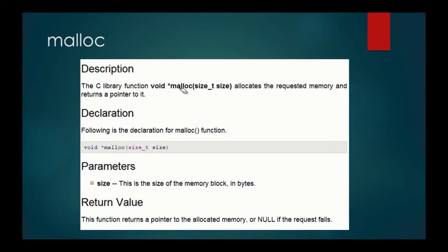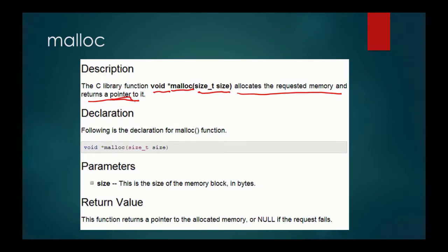There are a couple of things we need to know: the name of the function, which is malloc, the type and number of arguments, its return type, and then its description. What does it do? It allocates the requested memory and returns a pointer to it. We can see that it returns a pointer because of how we define a function that returns a pointer. In this case it may be a little strange because it's a void pointer. We don't typically associate the void keyword with returning anything, but there is such a thing as a void pointer - we'll talk about that in just a little bit.